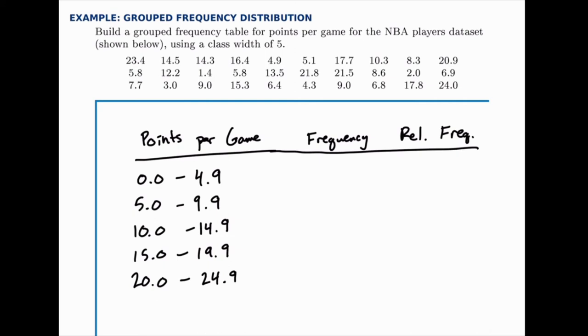We'll go through and select all the ones that fit into that category. So between 0.0 and 4.9, in the first row we find 4.9. In the second row, we find 1.4 and 2.0. And in the third row, we find 3.0, 4.3, and that looks like all of them. So there are a total of 5 that fall into that range.